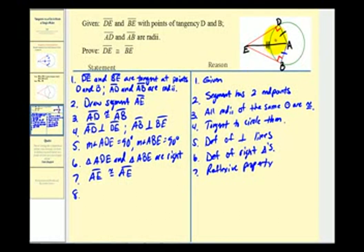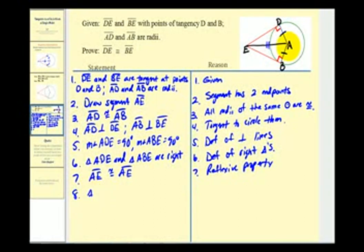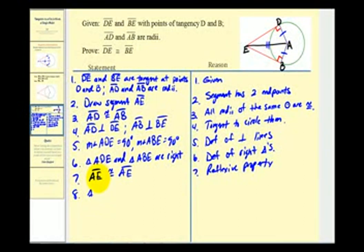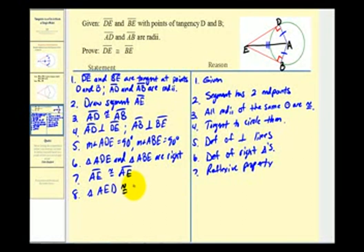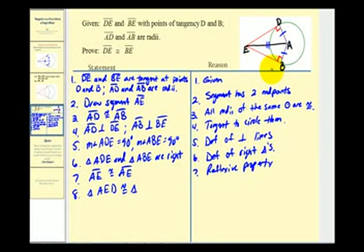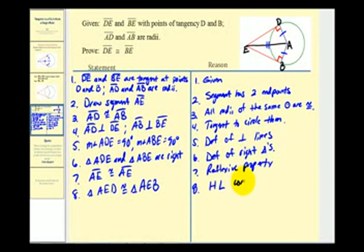So these two smaller right triangles are congruent: triangle AED is congruent to triangle AEB. Again, this is by hypotenuse-leg congruence.